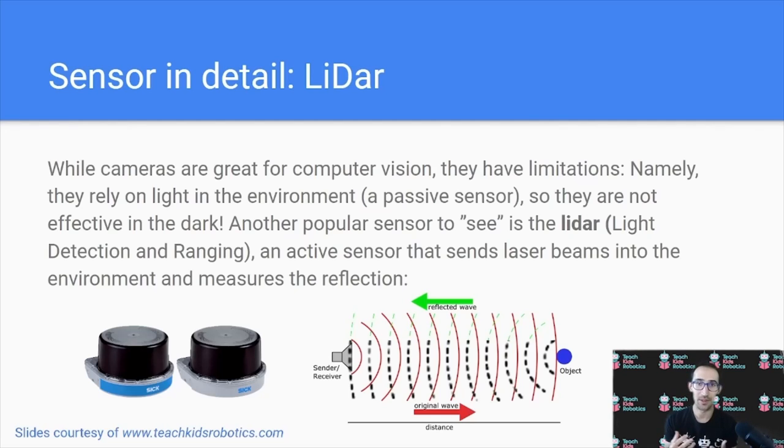A popular sensor is known as a lidar, or light detection and ranging, which is an active sensor that sends laser beams into the environment and measures the time it takes for the reflection to return.